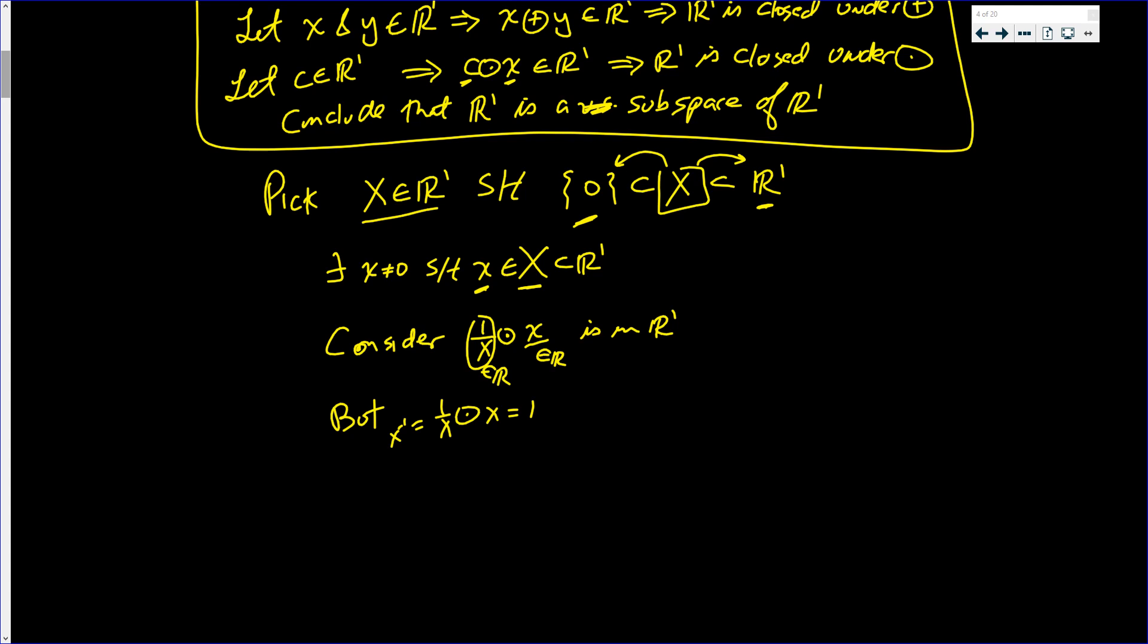Now, 1 is in X. Because it's closed. For it to be a vector space or a subspace. I guess I should say that X is a subspace of R1.